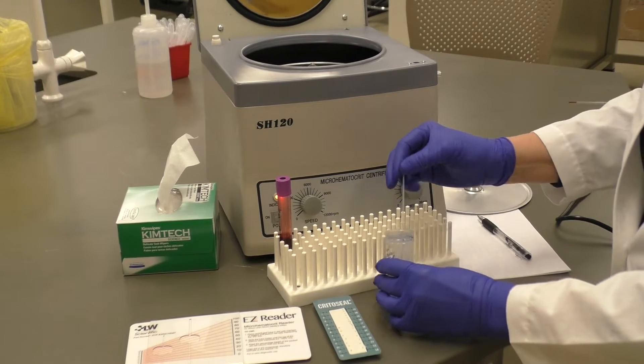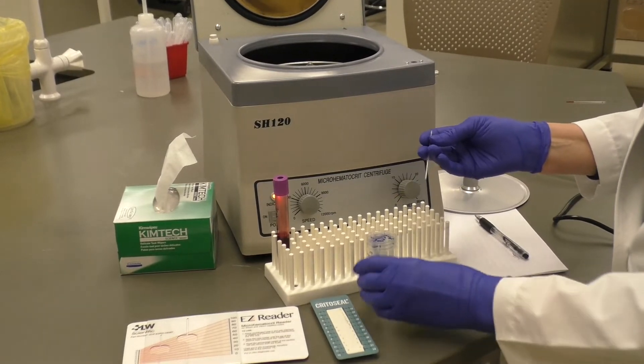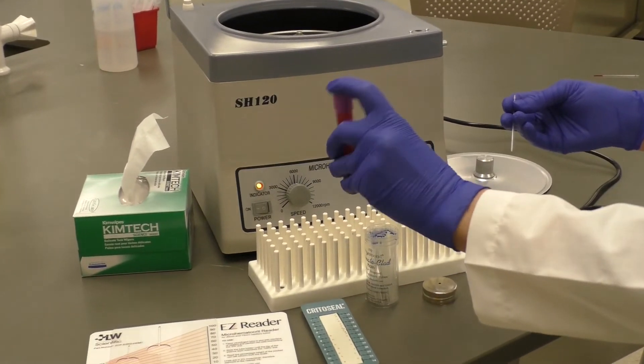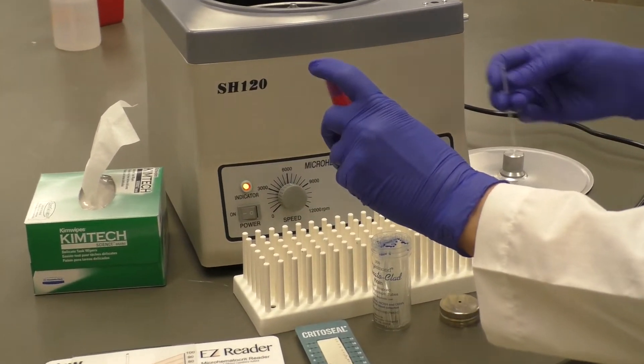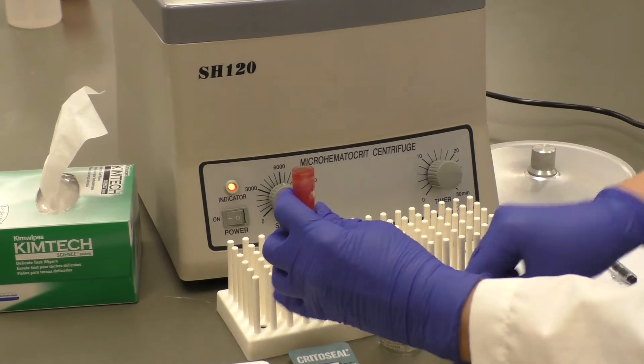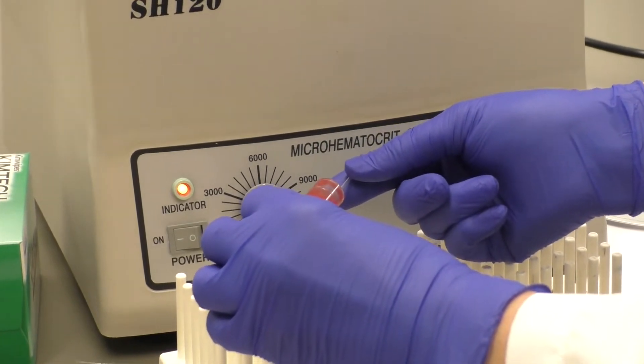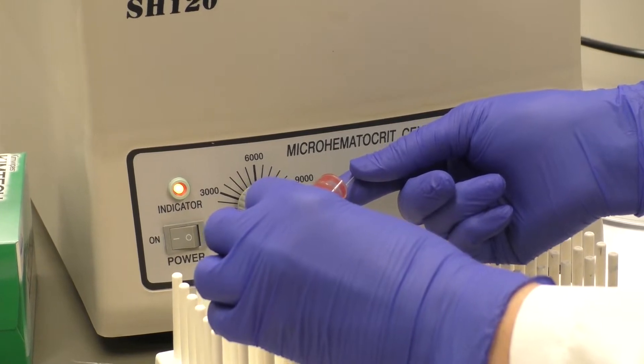Draw well-mixed anticoagulated blood into two micro-hematocrit tubes by capillary action. Avoid air bubbles. The tube should be filled about three quarters full.